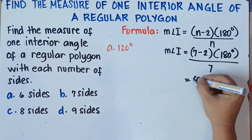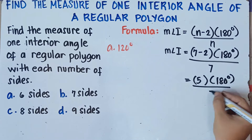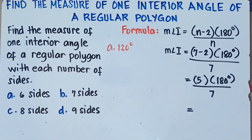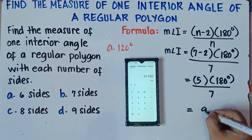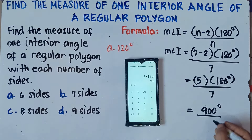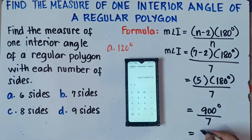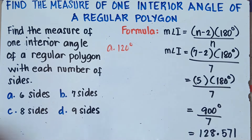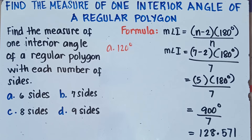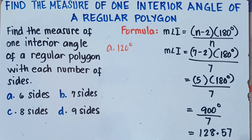So 7 minus 2 is 5, times 180 degrees, divide by 7. Use your cell phone or calculator. 5 times 180 equals 900 degrees, and then divided by 7 gives us 128.571. Our answer has a decimal, so we round to the nearest hundredths — two decimal places. After the 7, the next digit is 1, so we round down. Our answer is 128.57 degrees.